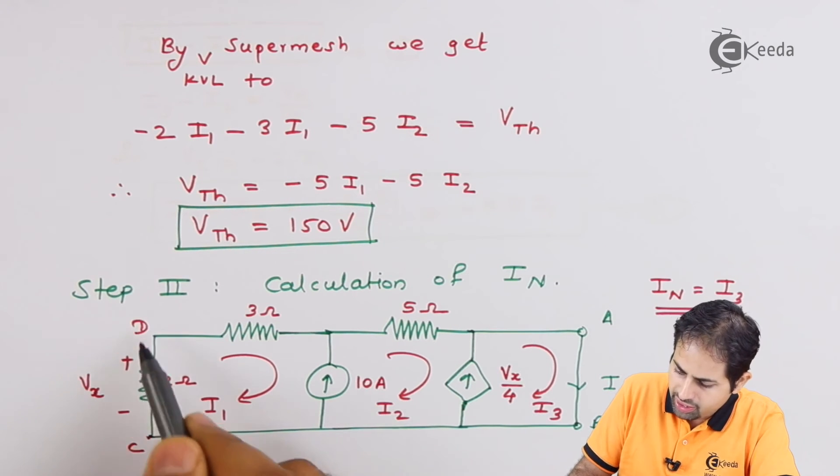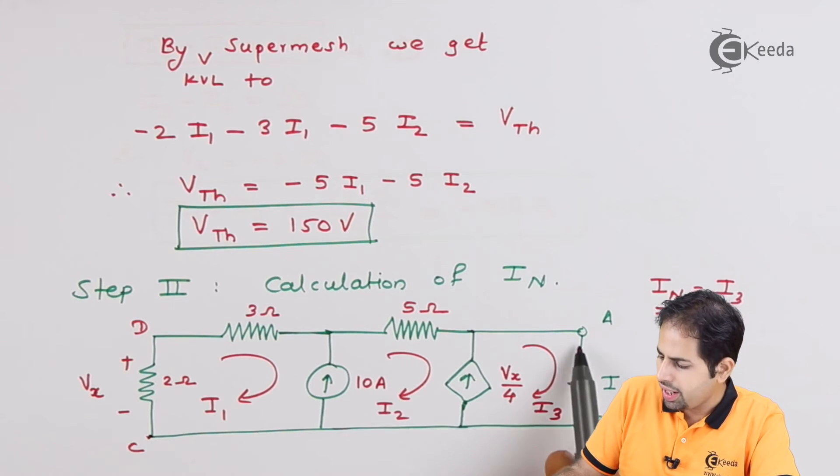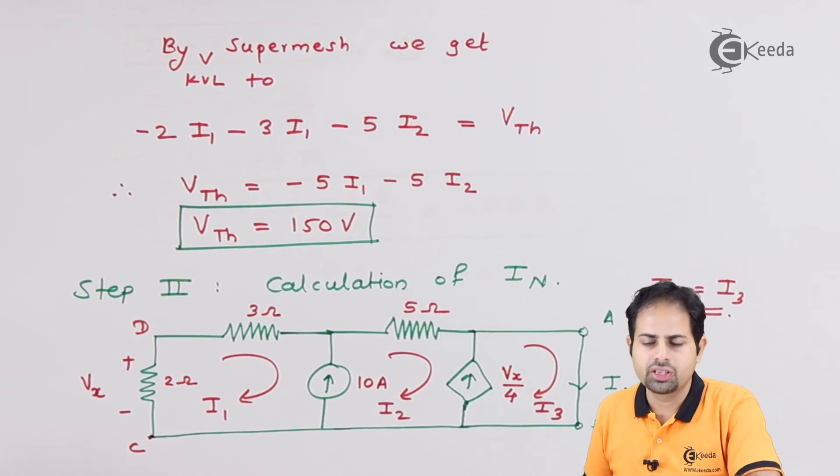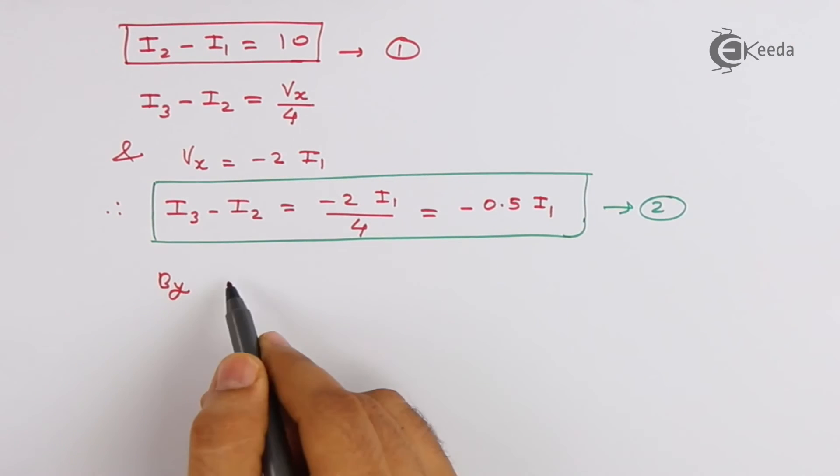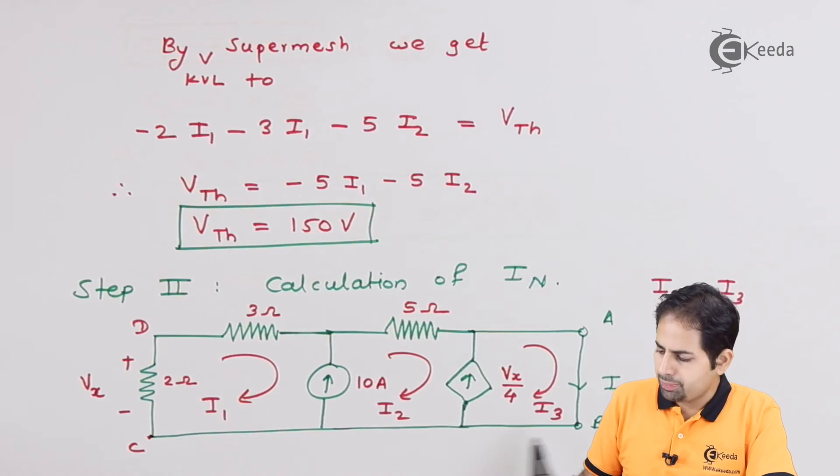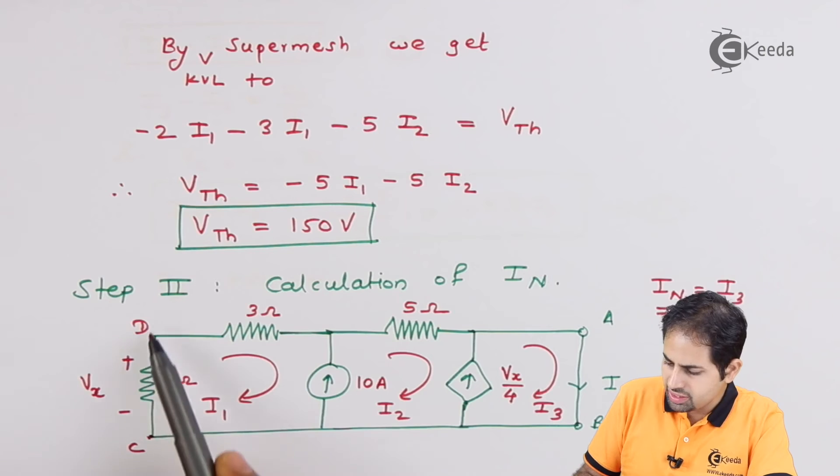So C, D, A and B like this clockwise. So let us go clockwise across A, B, C, D. So let us apply KVL to this entire loop A, B, C, D.